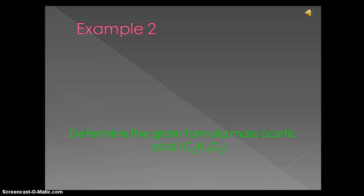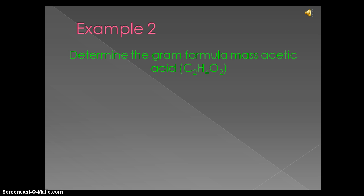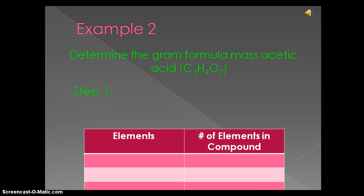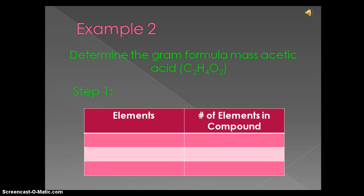Example 2. Determine the Gram formula mass of acetic acid. To begin to solve this, we have to determine the number of elements in each compound. The three elements we have in acetic acid are carbon, hydrogen, and oxygen. There are two carbon atoms in acetic acid, four hydrogen atoms, and two oxygen atoms.